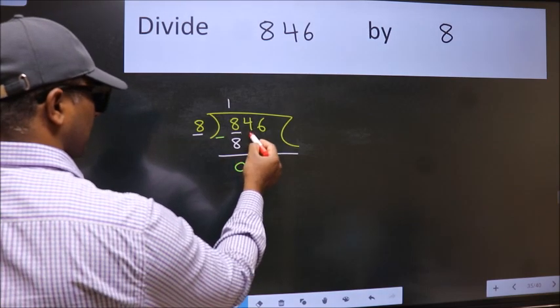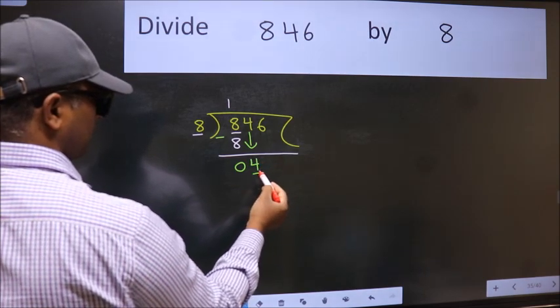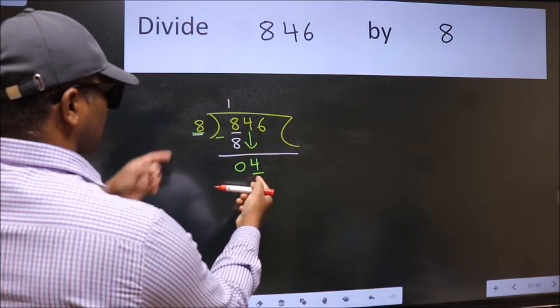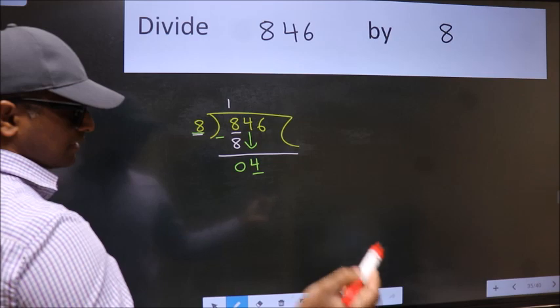After this, bring down the beside number. So 4 down. Now here we have 4 and here 8. 4 is smaller than 8, so we should bring down the second number.